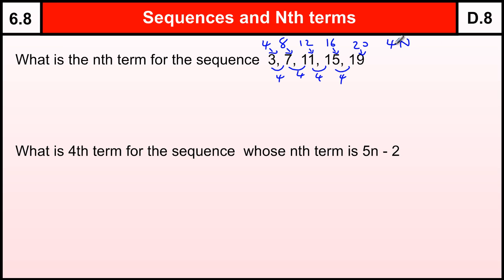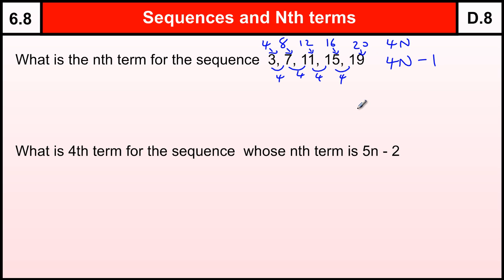So if I wanted the 10th one, I do 4 times 10. The N stands for whatever term in the sequence we are looking at. Now, this sequence that I actually want is the 4 times table, or 4 times N, take away 1 each time. And that's our Nth term: 4N minus 1.